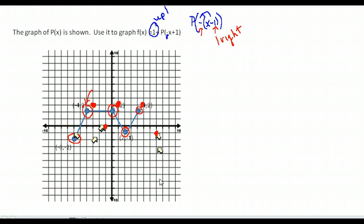Connect the dots. Notice we have the same basic shape, but it has been flipped sideways — the V portion is on the left and the plateau is on the right. It's also been moved to the right 1 and up 1 from its original position. It's something you have to practice on your own to get the hang of it, so try out a couple more and see how you do.